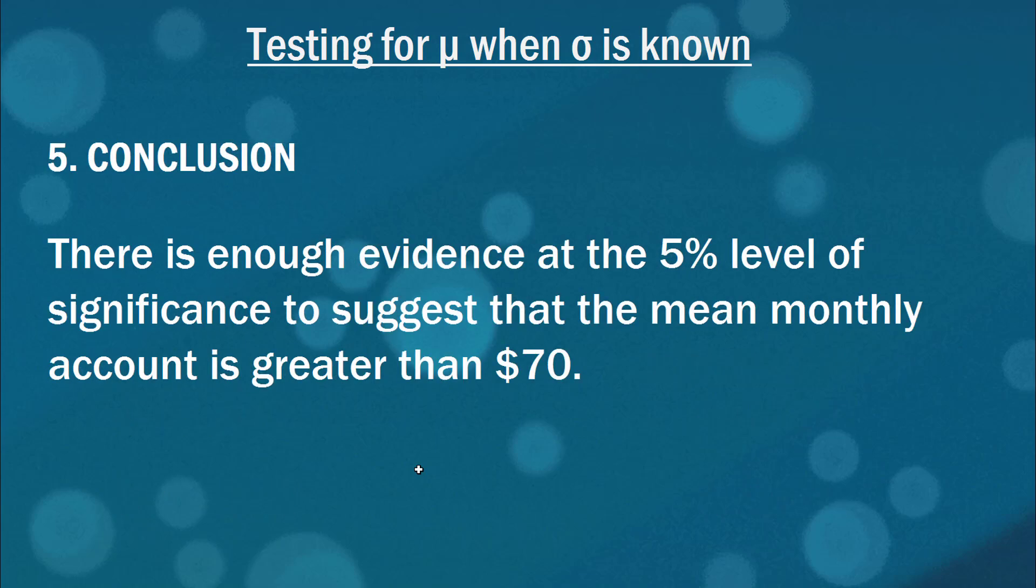Leaving us with the conclusion that there is enough evidence at the 5% level of significance to suggest that the mean monthly account is greater than 70. So that means our sample mean was indeed far enough away from what we were testing against, that's $70, for us to reject this null hypothesis. Now appreciate that this was a one tailed test. We were only ready to reject the null hypothesis if the sample mean was in one direction of that hypothesized mean, in the positive direction.